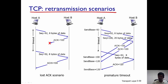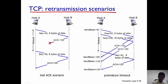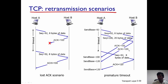B acknowledges both these segments. Delays on the internet can be unpredictable, so let's assume the acknowledgement does not get lost but gets delayed. By the time it reaches A, the timeout for the first segment has already expired. So A sends sequence number 92 and 8 bytes of data to B again. Then the second acknowledgement, acknowledgement equal to 120, reaches A.